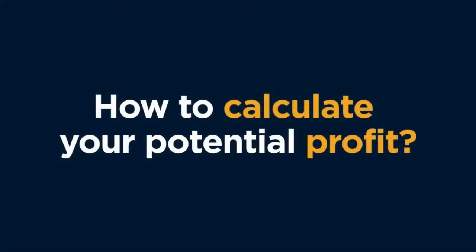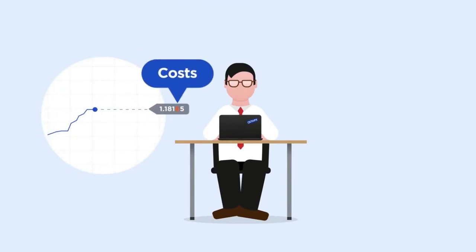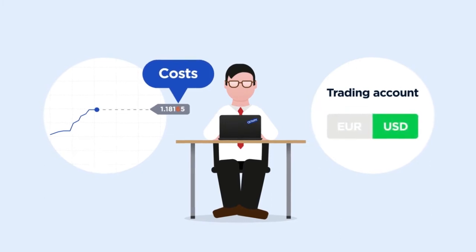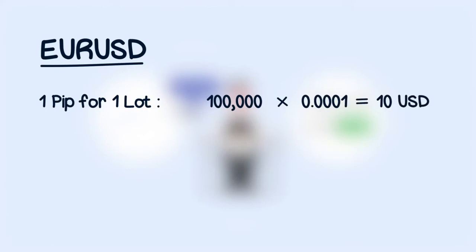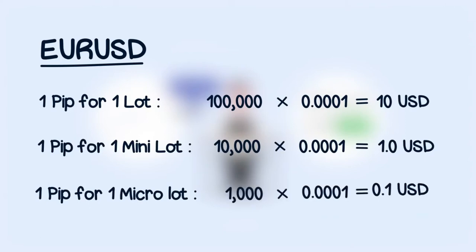How to calculate your own potential profit. To calculate an outcome of your order, you need to know the cost of 1 pip. This will also help you to forecast possible risks. A pip's value is expressed in the currency of your trading account — US dollar or Euro. If you open a US dollar trading account, it will be easy for you to measure pip prices for pairs which have US dollar as a quote currency. For example, if we take the Euro-US dollar pair, 1 pip for a standard lot equals 100,000 units of base currency multiplied by 0.0001 US dollar, which equals 10 US dollars. Hence, pip's price for a mini lot is 1 US dollar and for a micro lot, it's 0.1 US dollar.